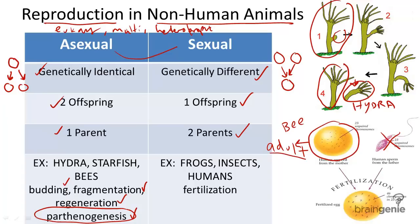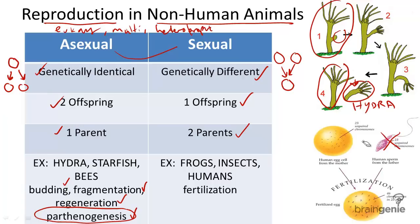Conversely, when animals reproduce sexually, as with most animals, this form of reproduction combines multiple processes. These multiple processes include meiosis, mating, and fertilization of gametes. Gametes are a fancy word for sex cells. We can see two here on the right — one is an egg cell, and one here on the right with the long flagellum is a sperm cell.